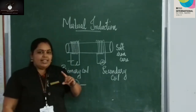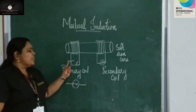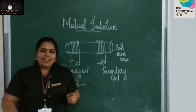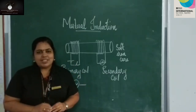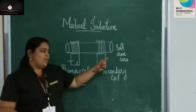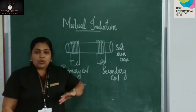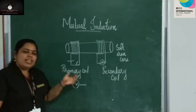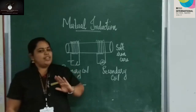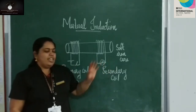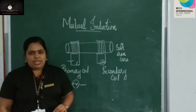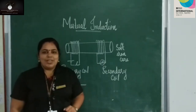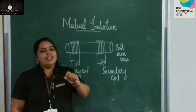In the first case, when we are connected with the cell and the switch is turned on and off, the magnetic flux changes in the secondary, so an EMF is induced. Or if we are connecting an AC source, there is also a change in the magnetic flux and an EMF is induced in the secondary. As a result, the bulb glows. This phenomenon is called mutual induction.